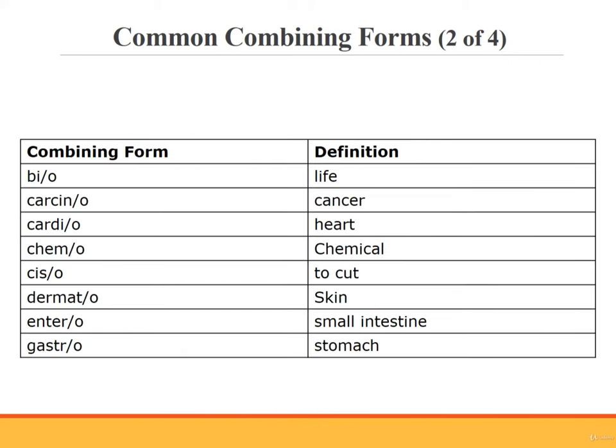This screen and the two that follow introduce some common combining forms. Bio means life; carcino means cancer; cardio means heart; chemo refers to chemical; cis/o means to cut; dermato refers to the skin; entero refers to the small intestine; and gastro is about the stomach.